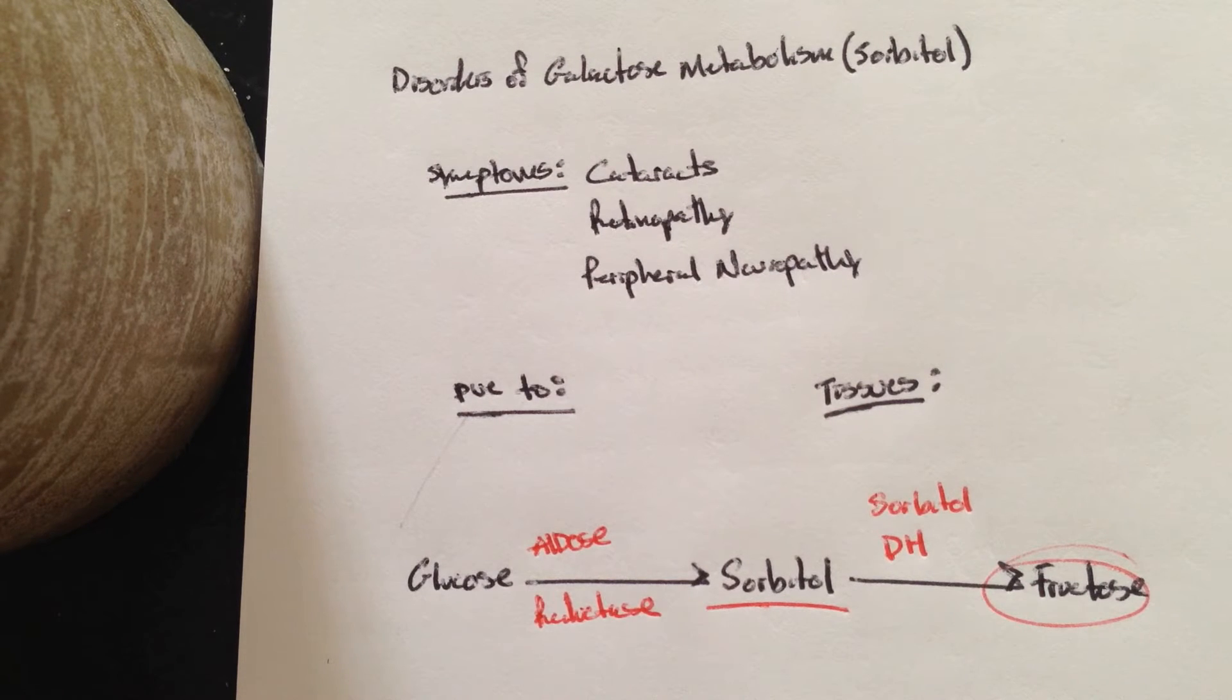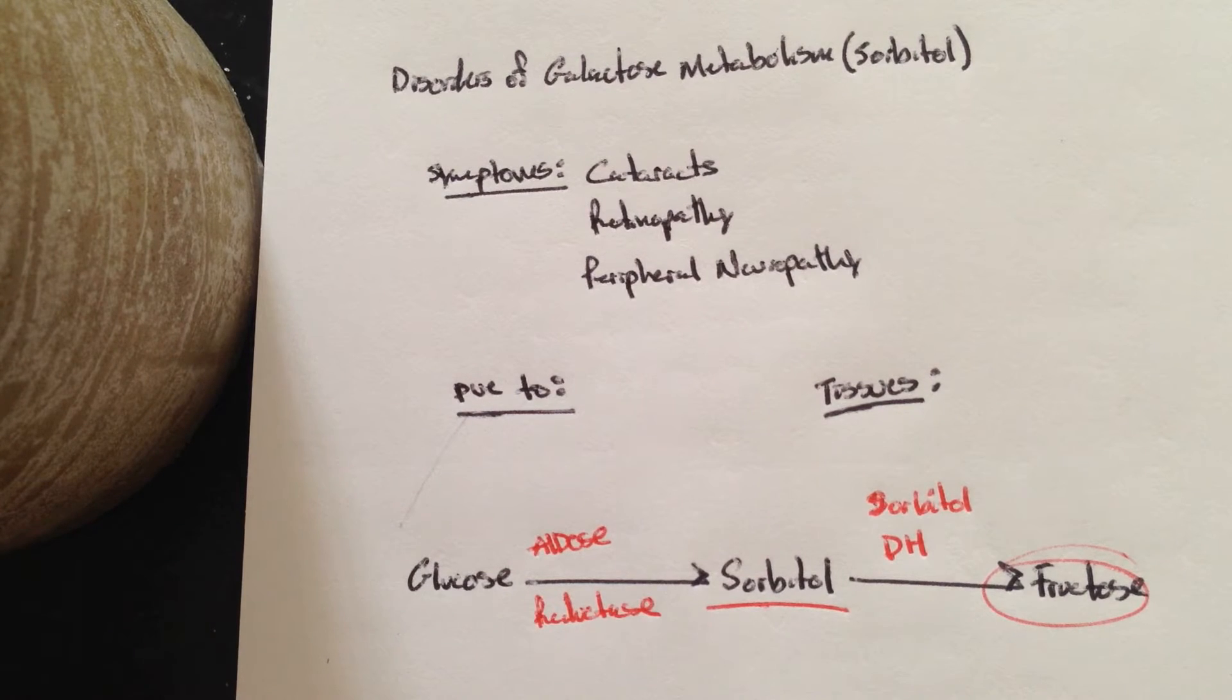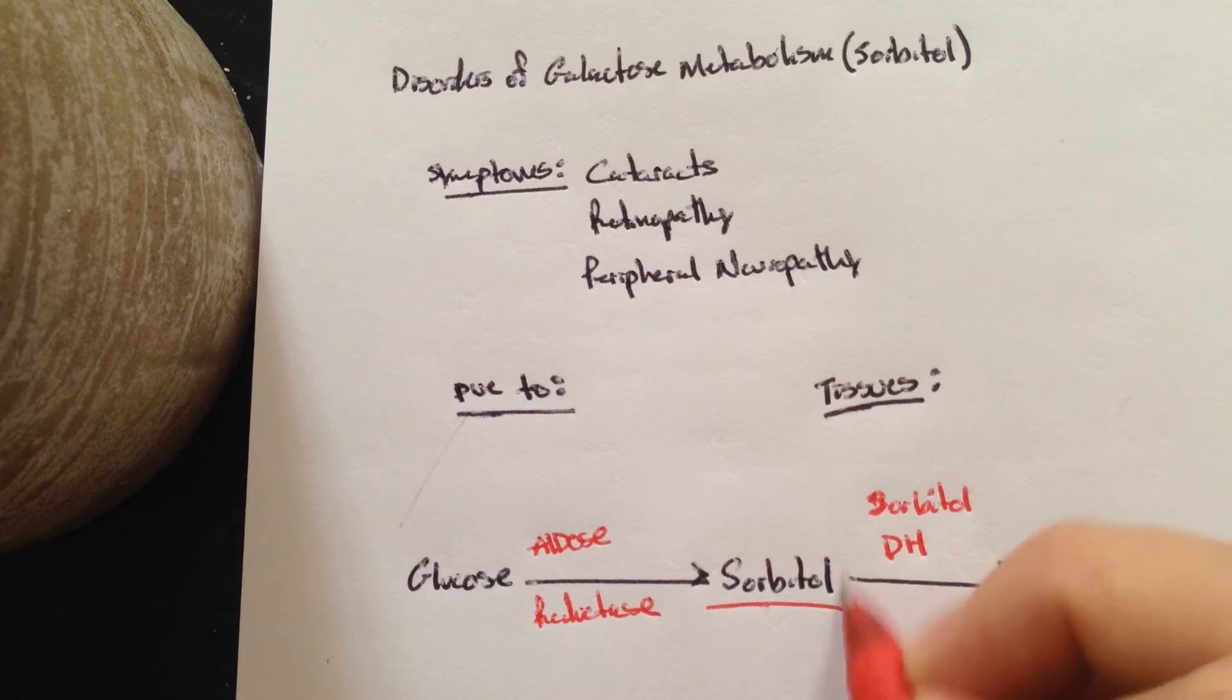So tissues such as the lens of the eyes, the ovaries, they don't have a lot of this sorbitol dehydrogenase. So when you have an elevated blood glucose for a long amount of time, you're going to have an increase in the amount of sorbitol.